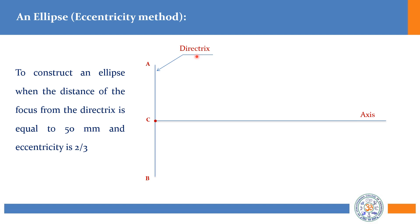No need to write 'axis' or 'directrix' labels in the exam — you can just draw as usual. All these lines should be thin lines. Now, the given distance — the fixed point distance from the directrix — is 50 mm. Dimensioning you can do later so that there will be no overlap of dimensions with the curve. At 50 mm, draw a line and mark a point on the axis. Name it as the fixed point or focus, F. So now you have obtained F, completed the directrix, and completed the axis.